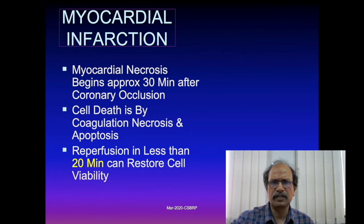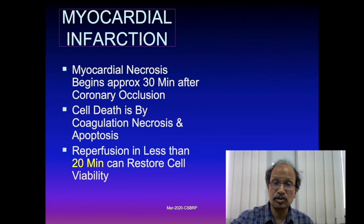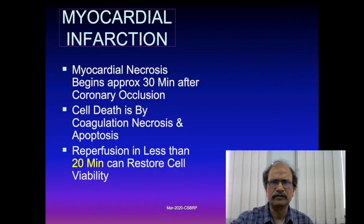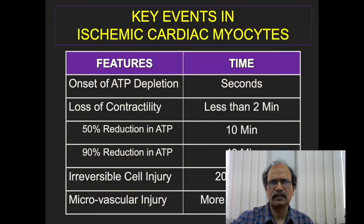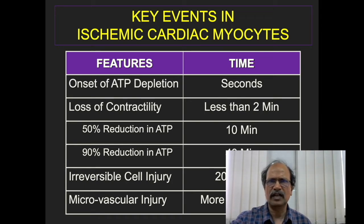Reperfusion of less than 20 minutes is associated with restoration of cell viability — the damaged cell can return to normalcy. Looking at the timeline of ischemic damage: ATP depletion occurs immediately within 10 seconds of ischemia onset, and loss of contractility can be expected within 2 minutes.